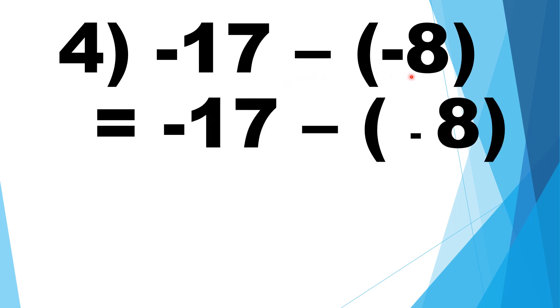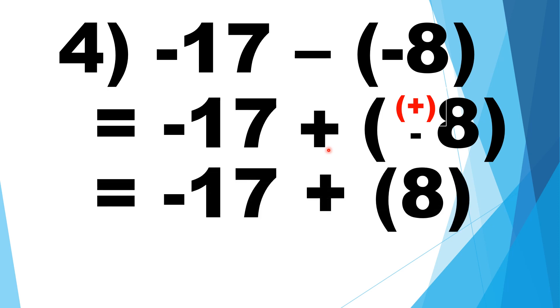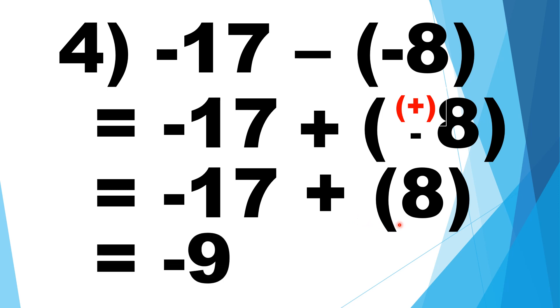Number 4: negative 17 minus negative 8. Change the sign of the subtrahend — negative to positive. Then proceed to addition: negative 17 plus positive 8 is equal to negative 9.